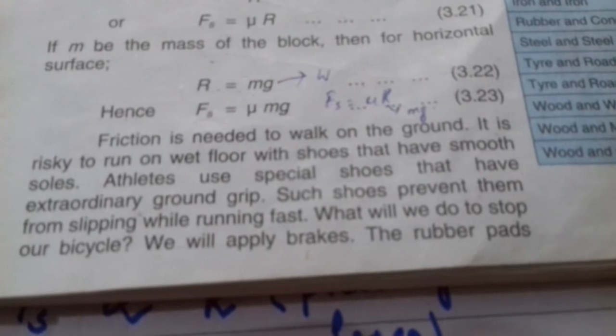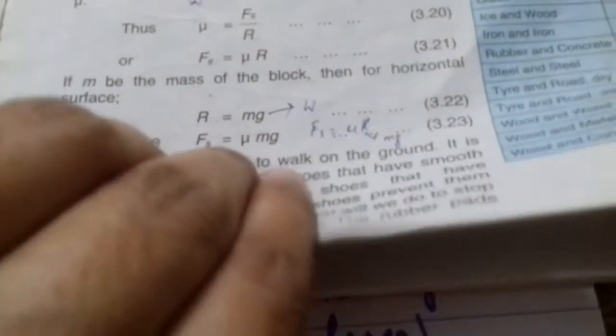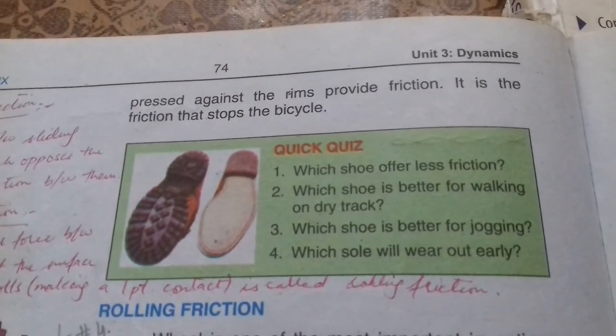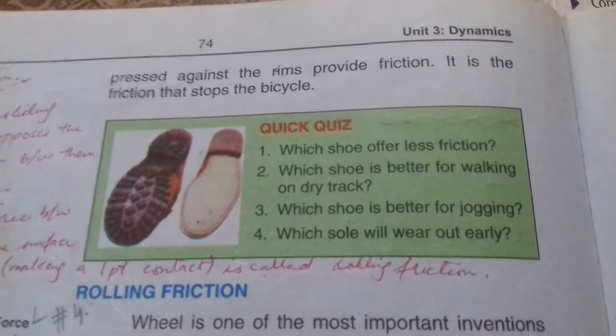How do we stop a bicycle? We apply brakes. The rubber pads pressed against the rim provide friction, and this friction stops the bicycle. See, this is a quick quiz.